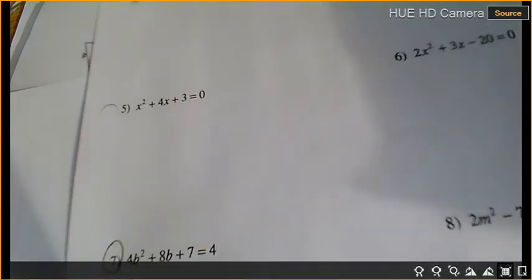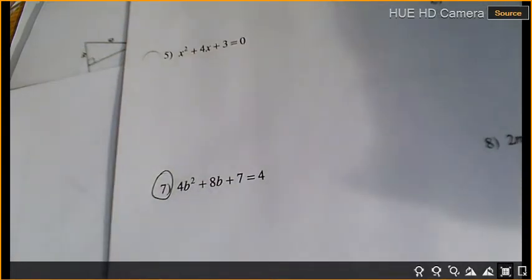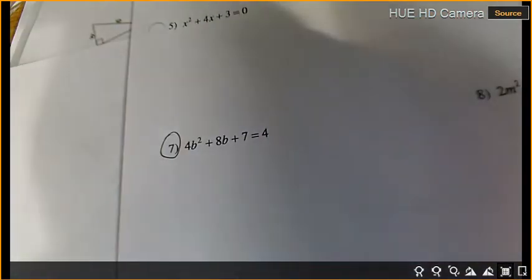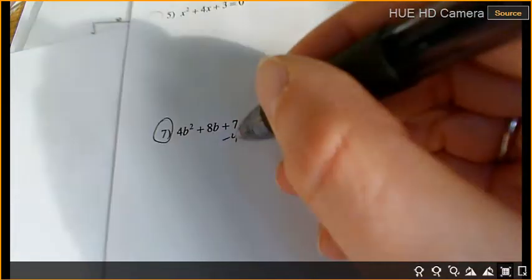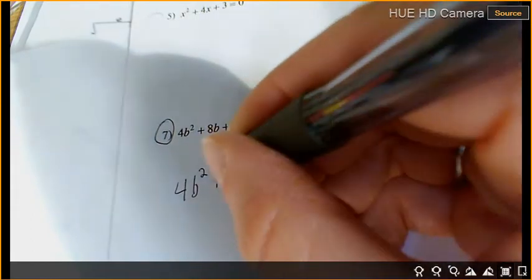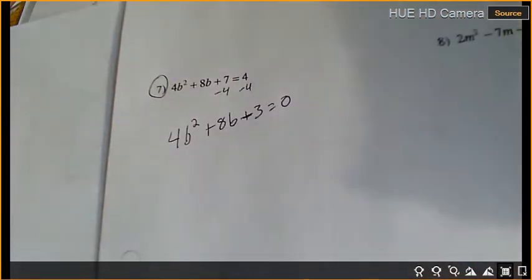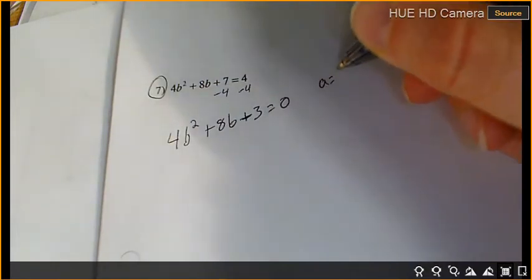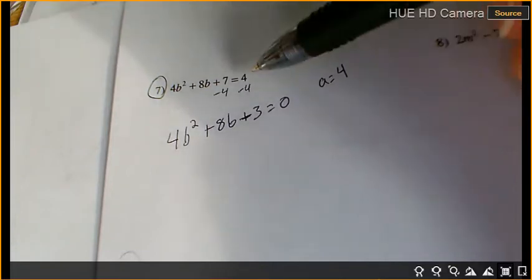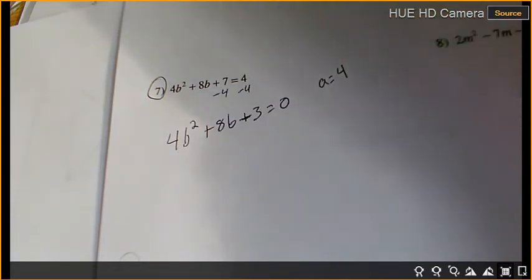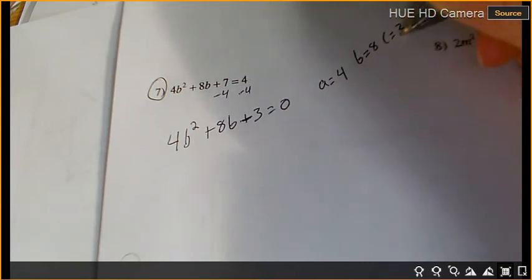We're going to look at number 7. We're going to use that same formula that we've been using, but this does not say equals 0. So what do I need to do first to get one side equal to 0? Minus 4. And the minus 4 goes right under the 7, because they're like terms. So I have 4b² + 8b + 3 = 0. So a equals 4, b equals 8, and c equals 3.